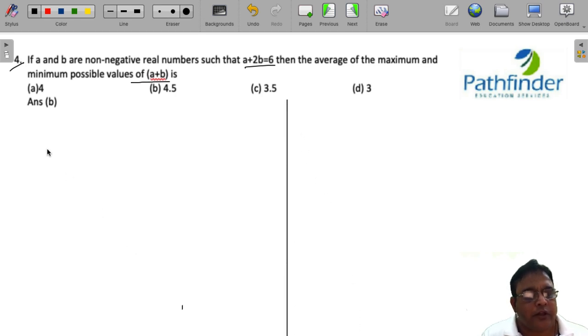Now, in order to solve this question, we need to realize that since this is a simple addition of A and 2B which gives you 6, and A and B are both non-negative real numbers.